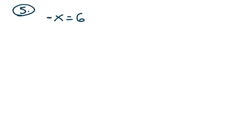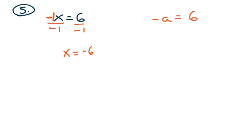Problem 5: pause the video — it shouldn't take you more than a second. If I want to get rid of this negative, notice there's technically a negative 1 here. You can either multiply or divide through by negative 1. So x equals negative 6. In other words, any time you have a variable with a negative sign, all that means is that if you flip the sign, you're good to go.